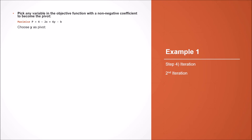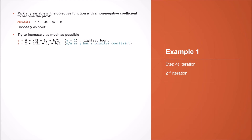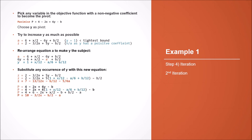We can now perform a second iteration of the algorithm. This time y is the only variable with a positive coefficient, so we must choose y. We want to increase y as much as possible. For equation a, we can increase y up to 1. In the second equation, y has a positive coefficient and could be increased to infinity, so it will never be our tightest bound. We rearrange equation a to make y the subject and substitute in every occurrence of y with the new equation, making y a basic variable and a a non-basic variable.